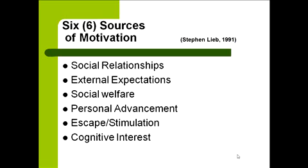Personal advancement is a motivator for the adult learner. People want to achieve a higher status and job, secure professional advancement, and stay abreast of their competitors. Your workers want to do better because they want advancements — for example, someone who started in the organization 10 years ago and is now a PO3 or a supervisor, while others advanced together in different units.